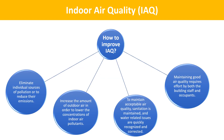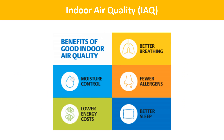To improve IAQ, the most effective way is to eliminate individual sources of pollution or reduce their emissions, and increase the amount of outdoor air to lower concentrations of indoor air pollutants. To maintain acceptable air quality, sanitation is maintained and water-related issues are quickly recognized and corrected. The benefits of good indoor air quality are better breathing, moisture control, fewer allergens, lower energy costs, and better sleep.